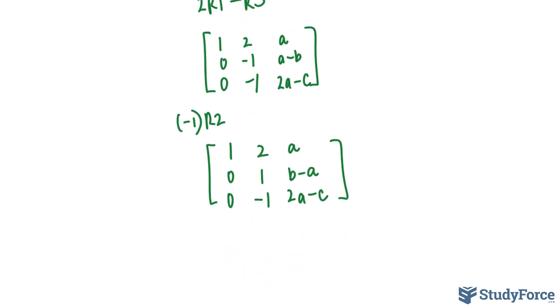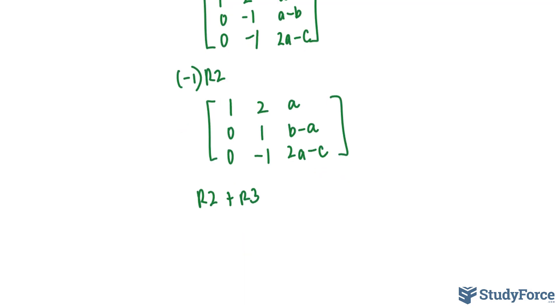The next operation that I will perform is by adding row 2 to row 3. And what this will do is eliminate this -1 so that it becomes a 0. Again, row 1 and row 2 will remain unchanged. So let's rewrite them. 0 plus 0 is 0. 1 plus -1 is 0. And B minus A plus 2A minus C. I'm doing the work on the side here. Gives us B plus A minus C.